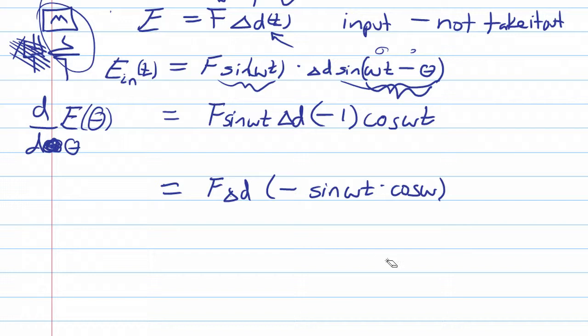This is negative sine theta times cosine theta. Oh yeah, sorry. This is not cosine theta t. This is cosine theta t minus theta here.